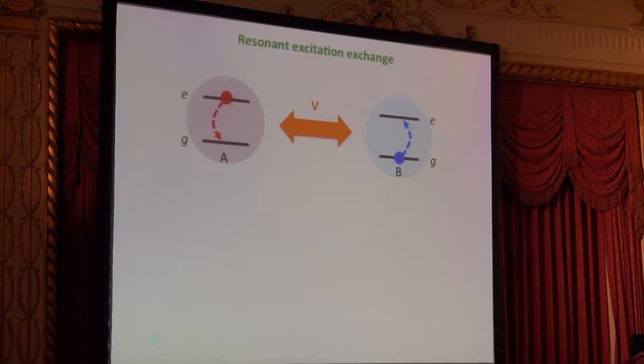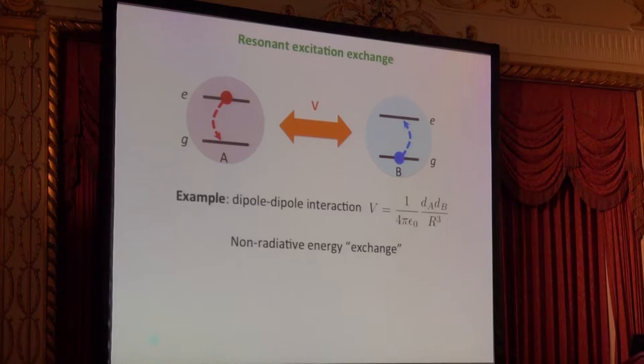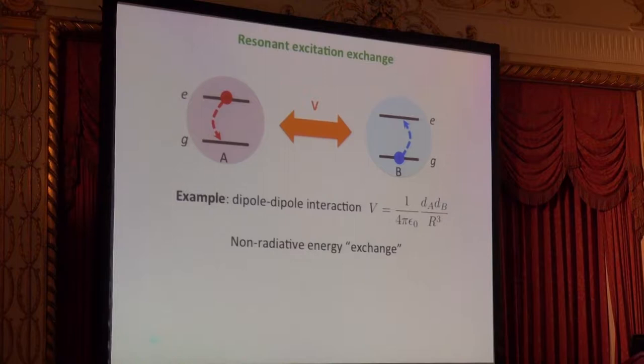Basically, what they can do in this situation is exchange energy: if one is prepared in the excited state and the other in the ground state, they can flip-flop between the two configurations. An obvious example is two atoms interacting via the dipole-dipole interaction, where the coupling is the regular d_A d_B over r³ type of coupling, and the atoms exchange energy in a non-radiative way, without exchanging real photons.